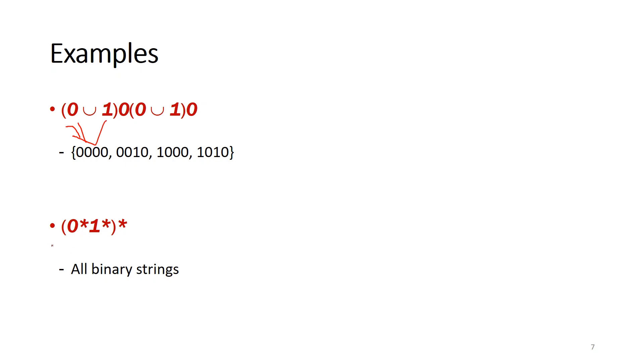This is about all binary strings. We can have any number of 0, any number of 1, and then any number of that combination. So it can cover all binary strings.